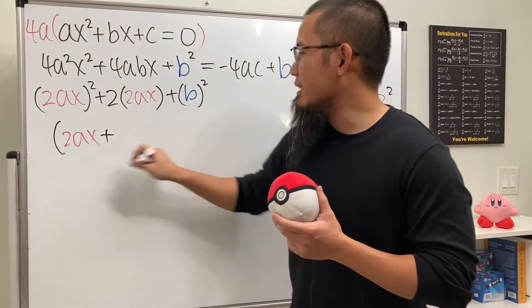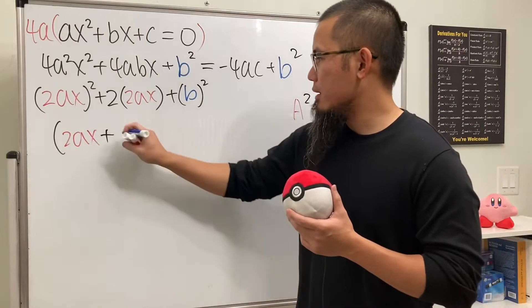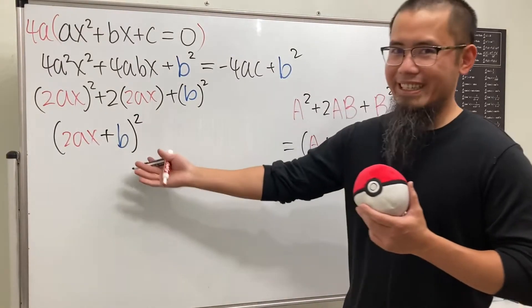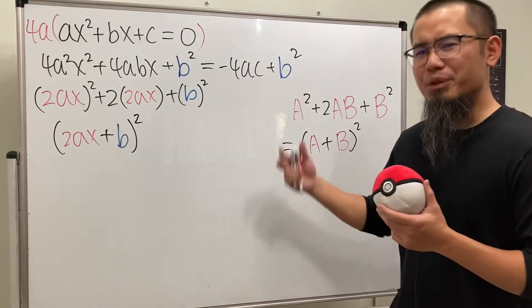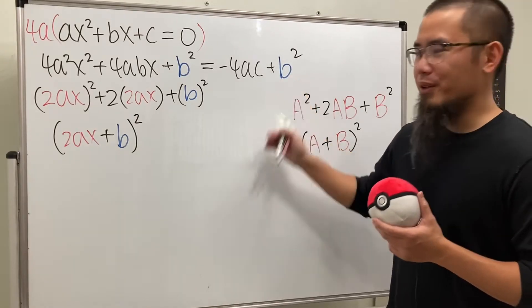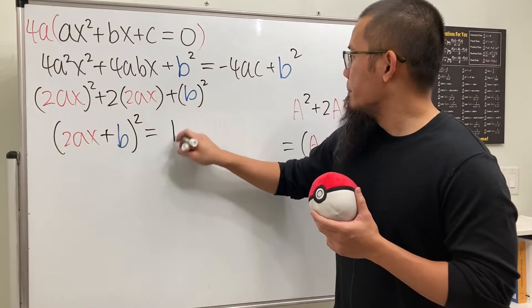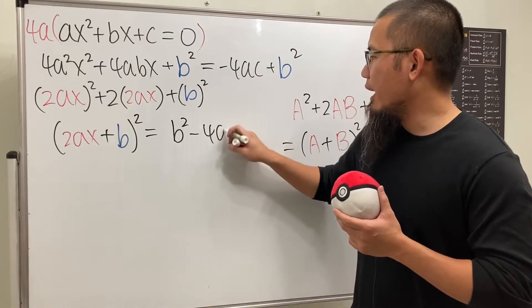2ax and then plus b, squared, like that. And then on the right-hand side, you guys all know it. I'm going to write that down first. So we have this equal to b² minus 4ac.